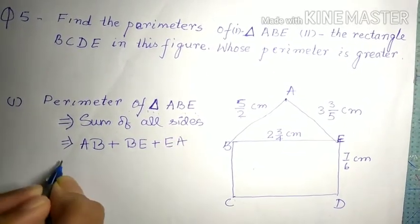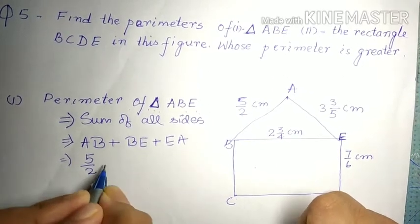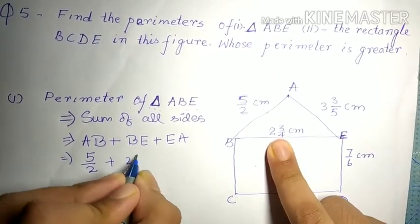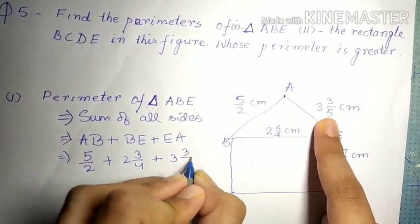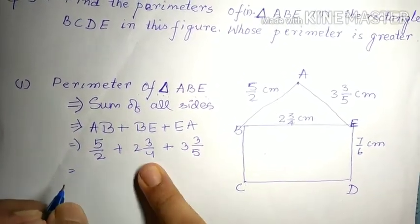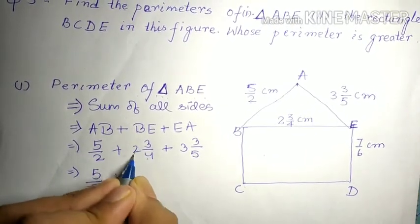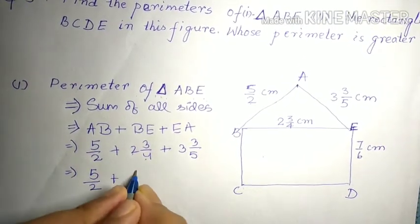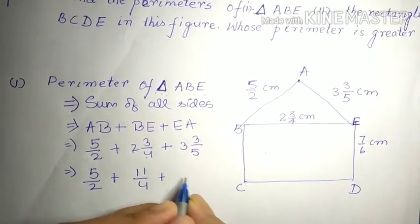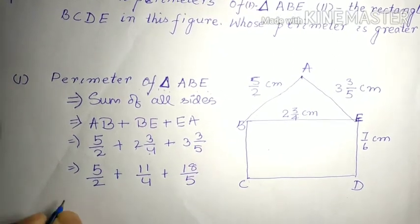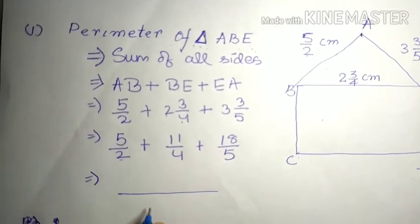Now let's write the values. AB is 5½, BE is 2¾, and EA is 3⅗. We will convert these mixed fractions into improper fractions. So: 5½ = 11/2, 2¾ = 11/4, and 3⅗ = 18/5. Now we will add them, so we find the LCM of the denominators, which is 20.